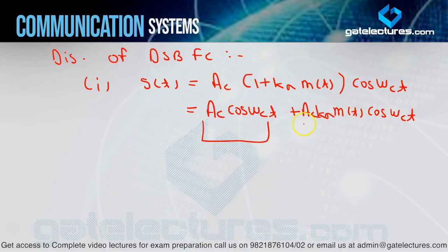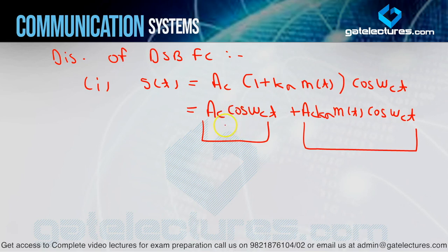Because of this extra carrier term, you have to use extra power on the transmitter side to send it, even though only the message signal part needs to be sent. This term gives the upper sideband and lower sideband, while this term is the full carrier — that's why the name is double sideband with full carrier. So this extra term causes extra power waste. The first disadvantage is: extra transmitter power in terms of carrier power.